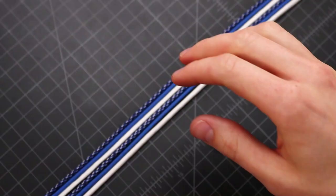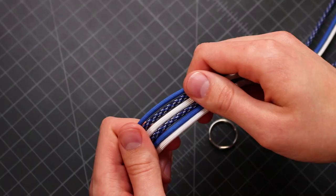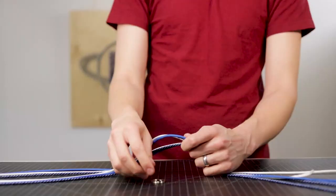Alright, so for this project we're going to be taking three different colors of Paracord. I've got about five feet of each. We're using the six strand sinnet weave and you'll also need a split keyring.